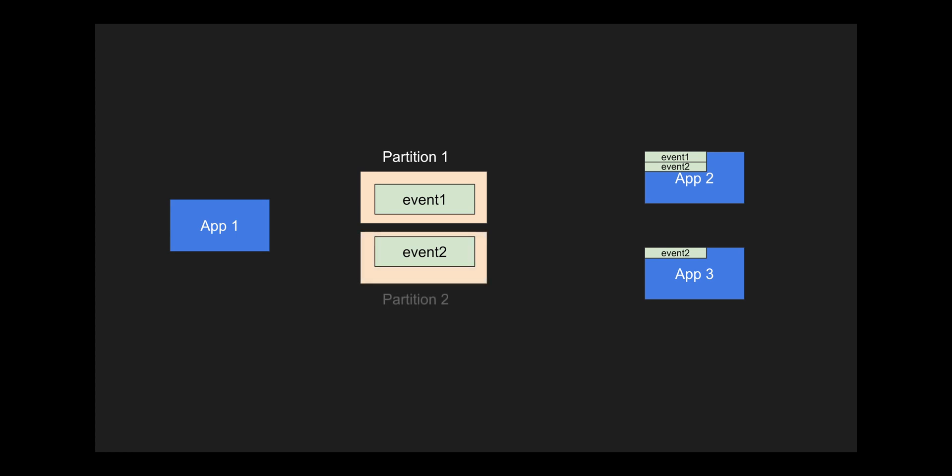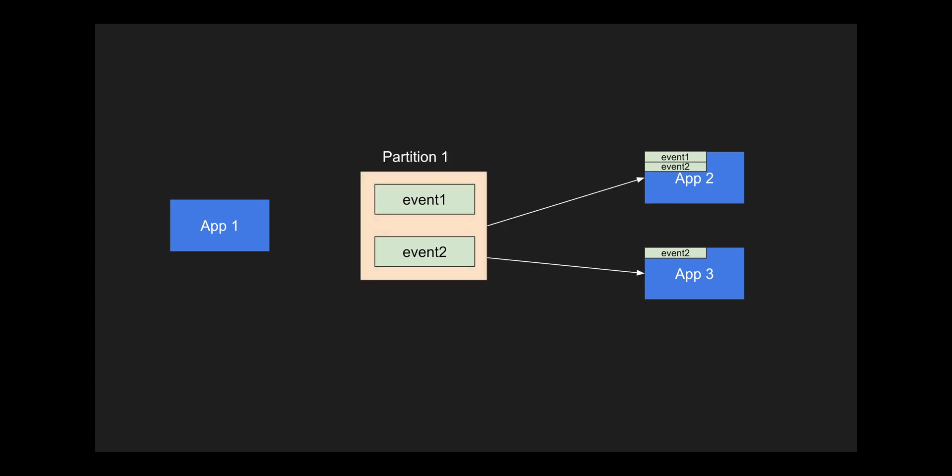In Kafka we have partitions — event 1 goes into partition 1 and event 2 into partition 2. Application 2 must subscribe to both partitions to retrieve both event types, and application 3 subscribes to partition 2 to get only event 2. Alternatively, with a single partition containing both events, application 3 would have to filter out event 1. For cross-topic consumption, you can leverage joins in Kafka, but it gets complicated when you want events from different topics consumed in the same application. In RabbitMQ, it's much simpler.